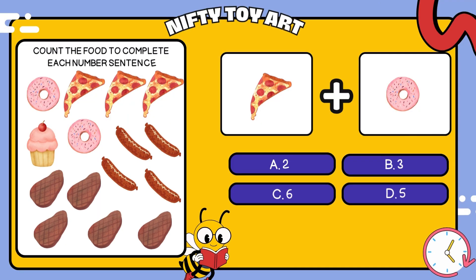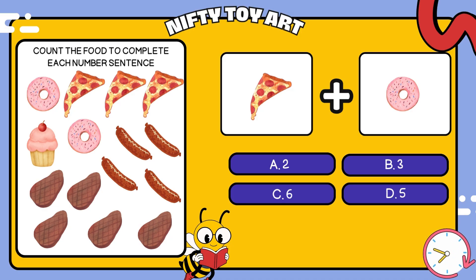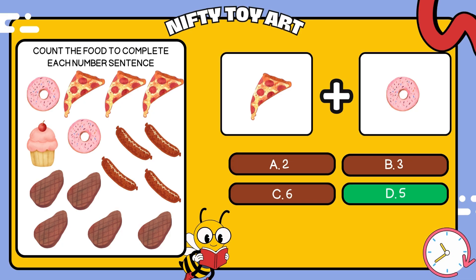Count the food to complete each number sentence. Look at the big boxes on the right. We have pizzas and donuts. How many foods is that in total? That's right, five.